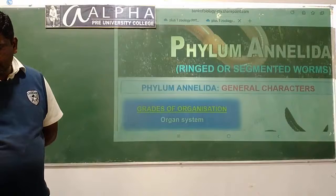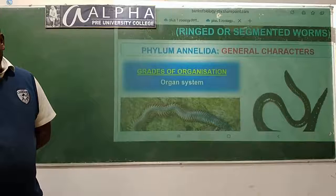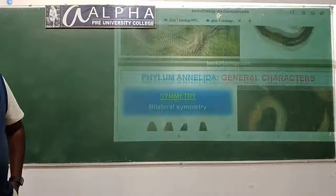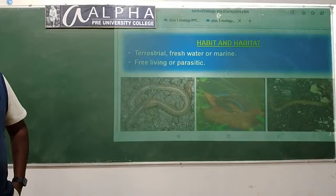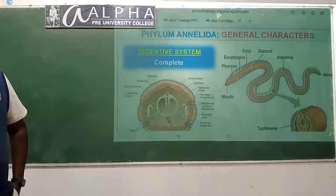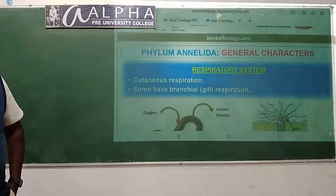The next phylum is Annelida, commonly called segmented worms. They show organ system level organization. They are bilaterally symmetrical, triploblastic, and coelomate. They are terrestrial, freshwater, or marine forms, free living, and some are parasites. The digestive system is complete, containing both mouth and anus.